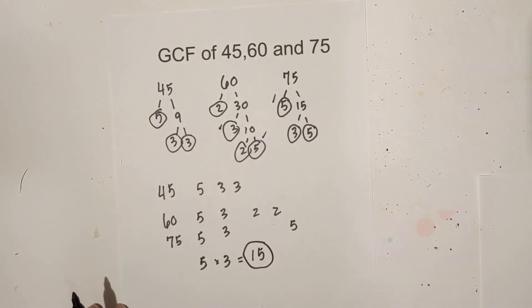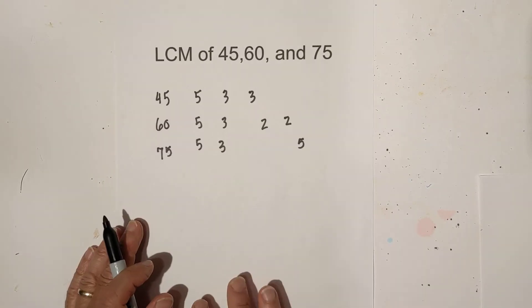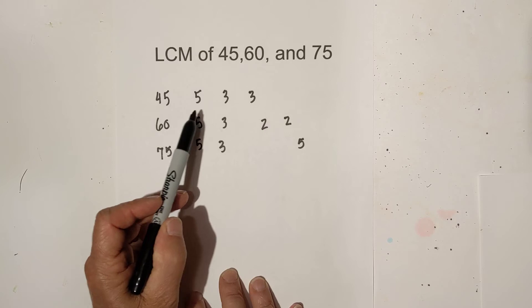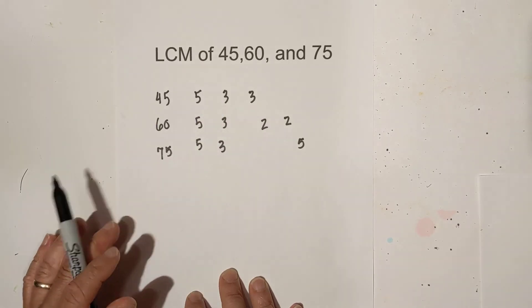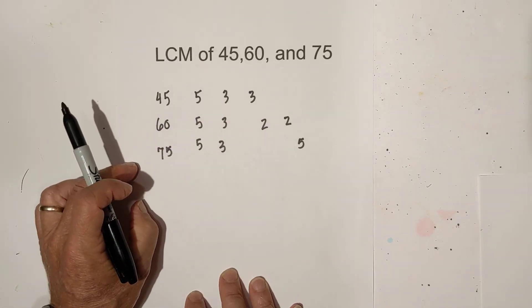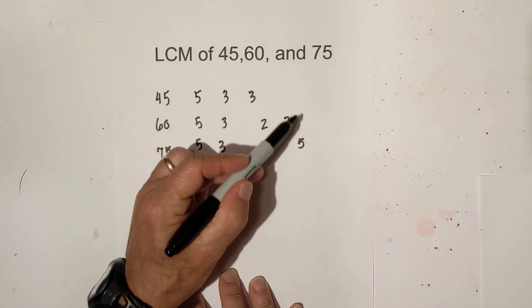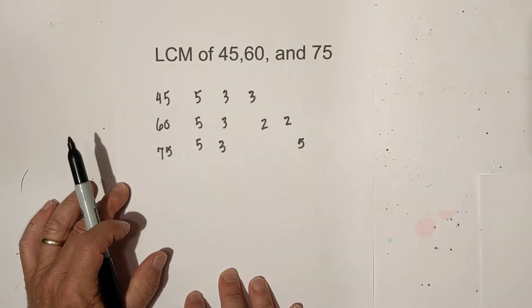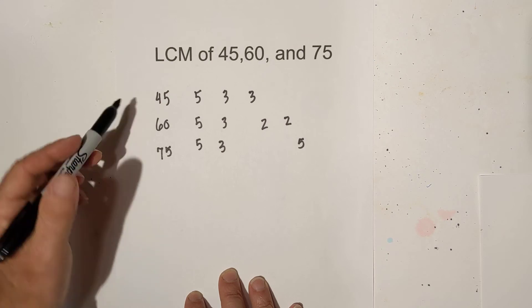Now let's focus on the LCM. Now for the LCM you will notice I have the same chart. I just use the numbers from the factor trees. And for the LCM basically you multiply all these numbers together, all the prime numbers together. Except you use this rule.